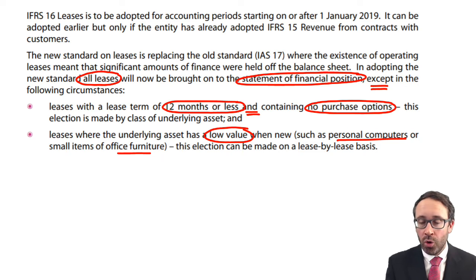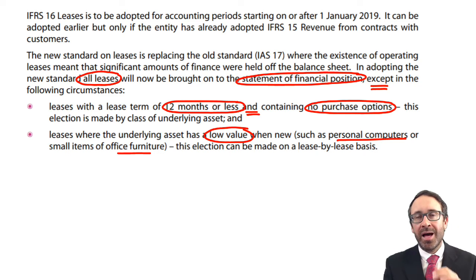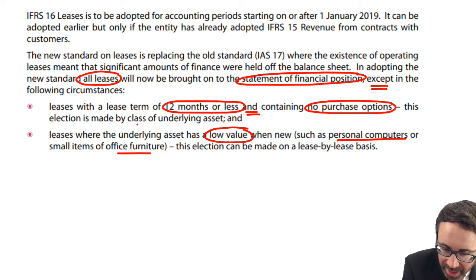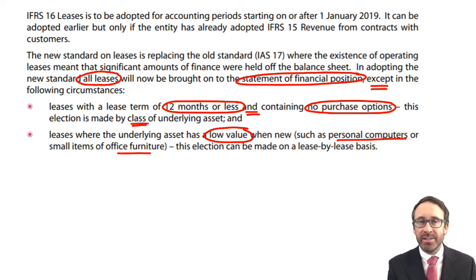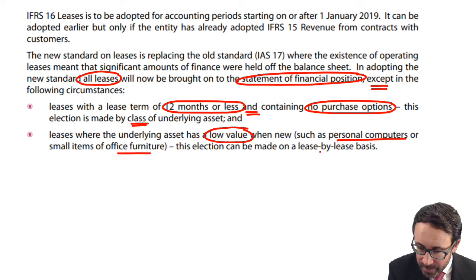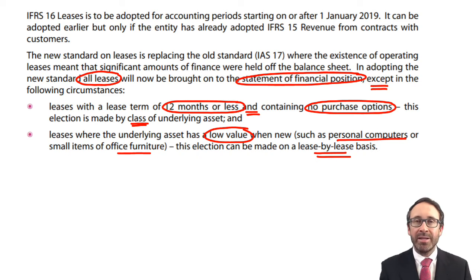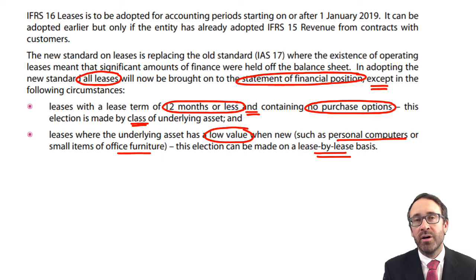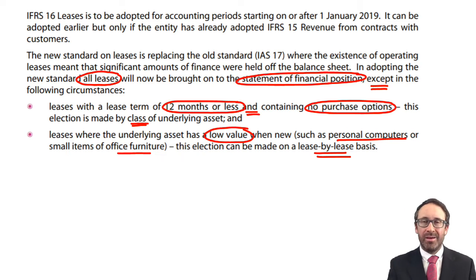Just note that for short-life assets — assets leased for periods of less than 12 months — that election is done by class of assets, so all assets within the same class would be treated under that 12-month lease period. However, for low value assets, that is done on a lease-by-lease basis — you look at each lease individually for IT or office furniture and identify whether it is low value.